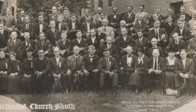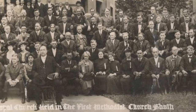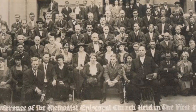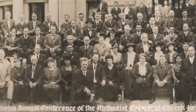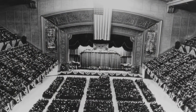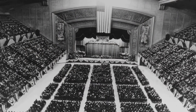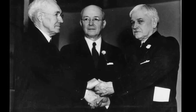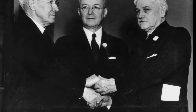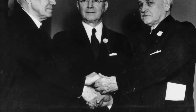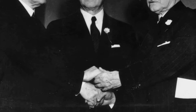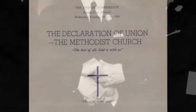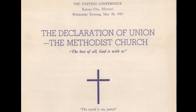In 1925, Oklahoma was one of only nine annual conferences that voted for an early proposed unification plan. Finally, in 1939, a National Methodist Uniting Conference was held in Kansas City. The Methodist Episcopal Church, the Methodist Episcopal Church South, and an earlier offshoot, the Methodist Protestant Church, officially merged to become simply the Methodist Church.